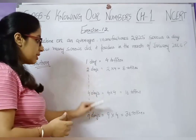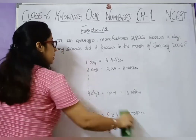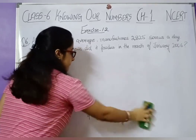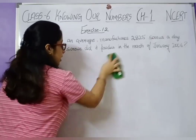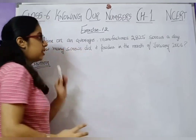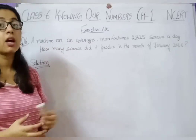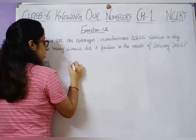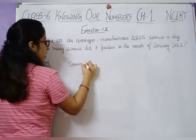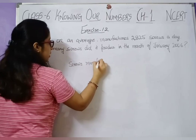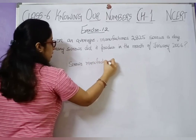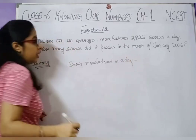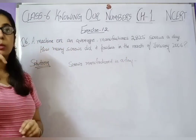This question works the same way. Let's start the solution. Since this is a word problem, first write the statement. Screws manufactured in a day — 'a day' means one day — equals 2,825.